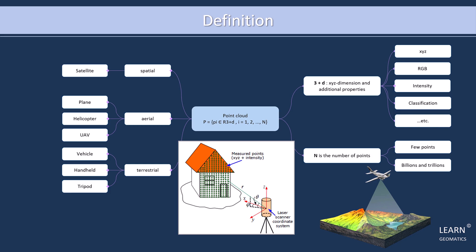Classification values are assigned to each point to identify its object class, such as ground, vegetation, or buildings. The number of points in a point cloud can range from just a few to billions or even trillions of points. The size depends on the area covered by the sensor, the density of the point cloud, and the level of detail required for the application.